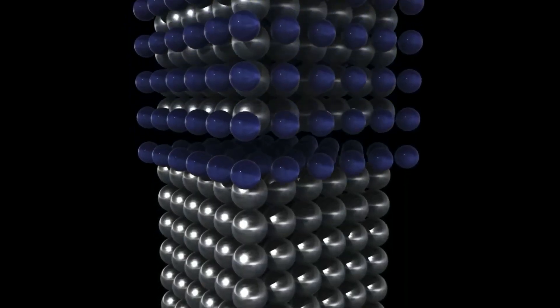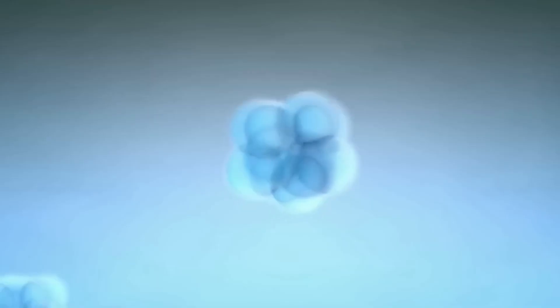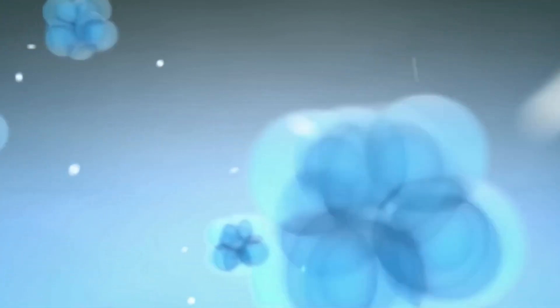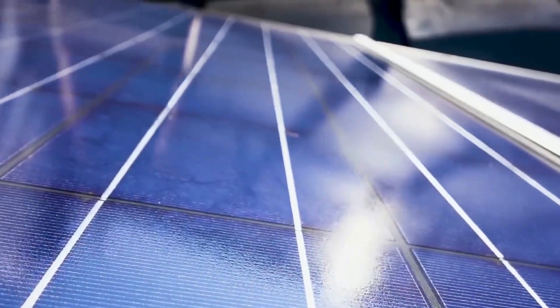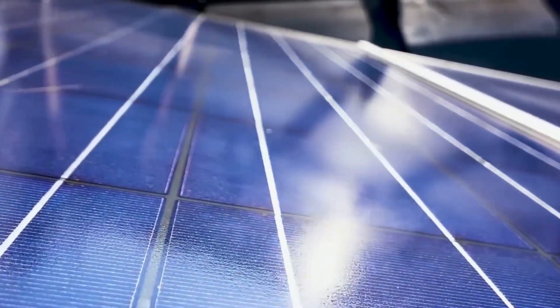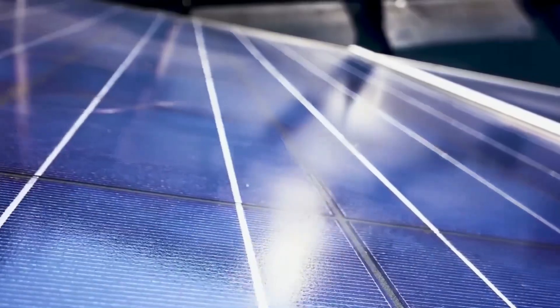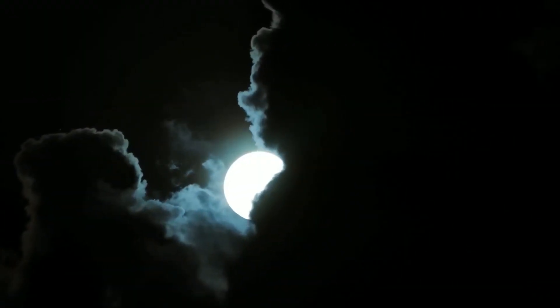Polymer-based solar cells, on the other hand, have a considerably cleaner and less energy-intensive manufacturing process, which reduces their carbon footprint. As a result, people seeking to invest in green technology and lessen their environmental impact may find them to be a desirable option.